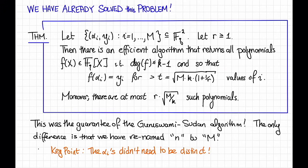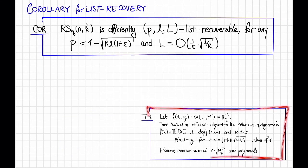Well, I claim that it immediately gives us the following corollary. So I've copied the theorem down here, and here's a corollary. The corollary says that a Reed-Solomon code over Fq of length n and dimension k is efficiently p comma little l comma big L list recoverable. That is, it solves that interpolation problem that we saw on a previous slide, provided that p is not too large, smaller than 1 minus the square root of r times l times 1 plus epsilon for some parameter epsilon. Sorry, I should have written let epsilon be greater than zero at the beginning. There we go. And the list size can be big O of 1 over epsilon times the square root of l divided by r.